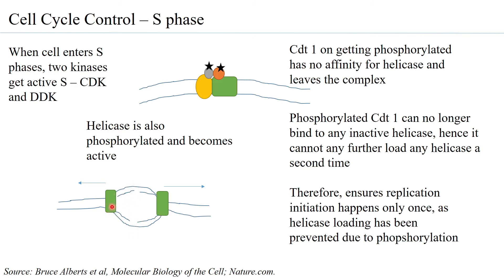Once the helicase moves away, the origin region is open and available for another helicase to bind — but a helicase will not bind because CDT1 has been phosphorylated. Phosphorylation of CDT1 is only one mechanism of control. CDT1 transcription is also decreasing, and another molecule called geminin is activated. Geminin is an inhibitor of CDT1: it binds CDT1, preventing it from ever binding the helicase again.